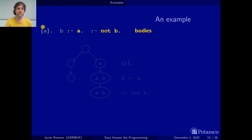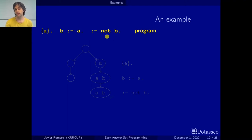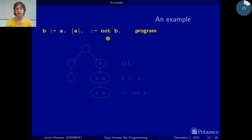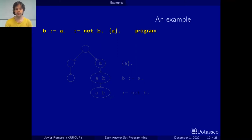This choice rule doesn't have a body. The three rules together form a program, but also a single rule alone would be a program. A program is interpreted as a set of rules, which means the order in which we write the rules doesn't matter — the answer sets of the program will be the same regardless of whether we put the choice rule first, second, or third. Let's now see what the answer sets of this program are.